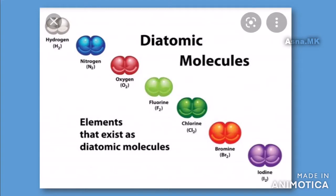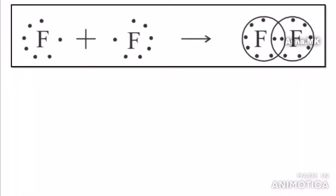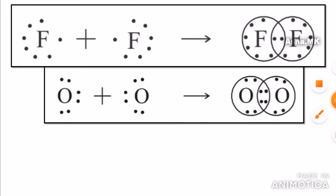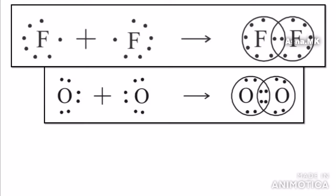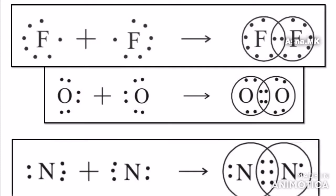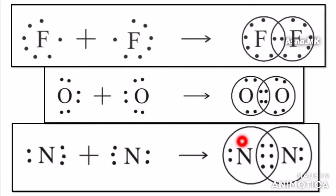These are all diatomic molecules. We are looking at the Fluorine Lewis structure. In this figure, the fluorine molecule shows a covalent bond — electrons are shared. One pair of electrons forms a single bond.